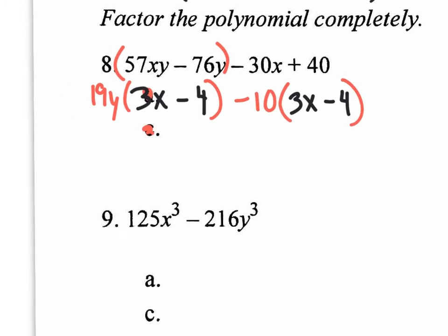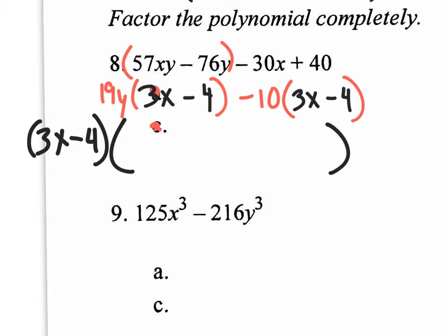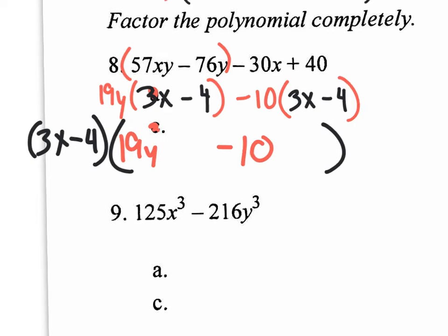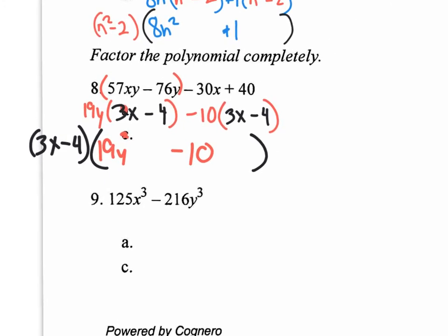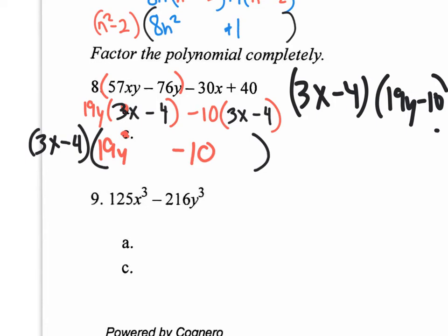I want to take the 3X minus 4 and pull it out from both groups at the same time. So 3X minus 4 is on the outside, and on the inside of these parentheses I'm going to have 19Y minus 10. Of course, check if you could factor anything else — but there's nothing else to factor. So this is your answer: 3X minus 4, parentheses 19Y minus 10. And that's your answer for number 8.